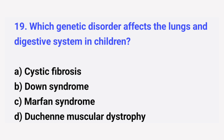Question number 19. Which genetic disorder affects the lungs and digestive system in children? The right answer is option A: Cystic fibrosis.